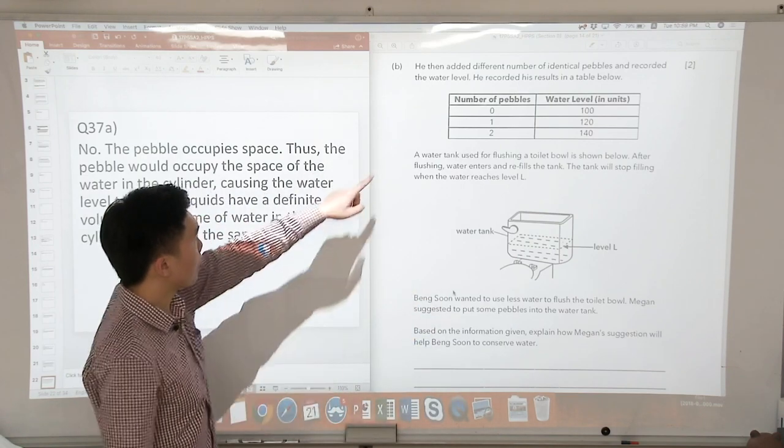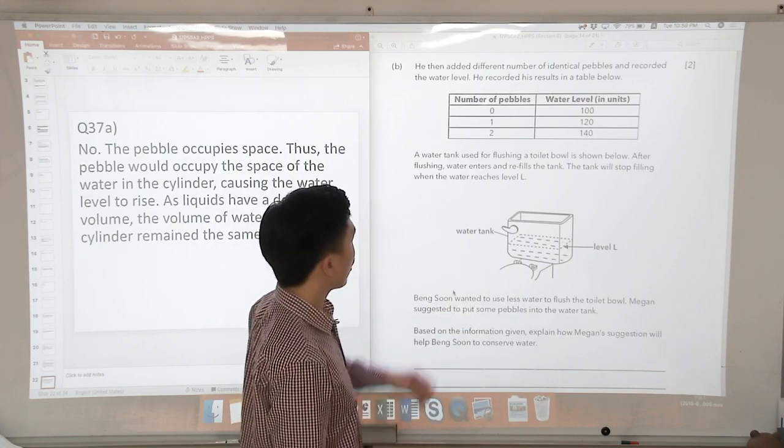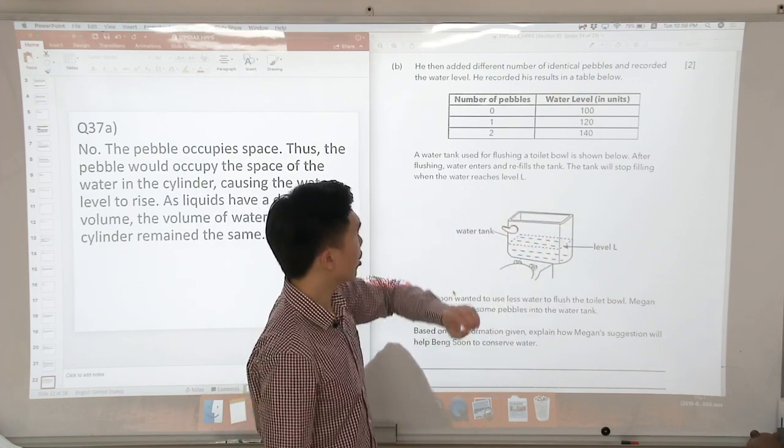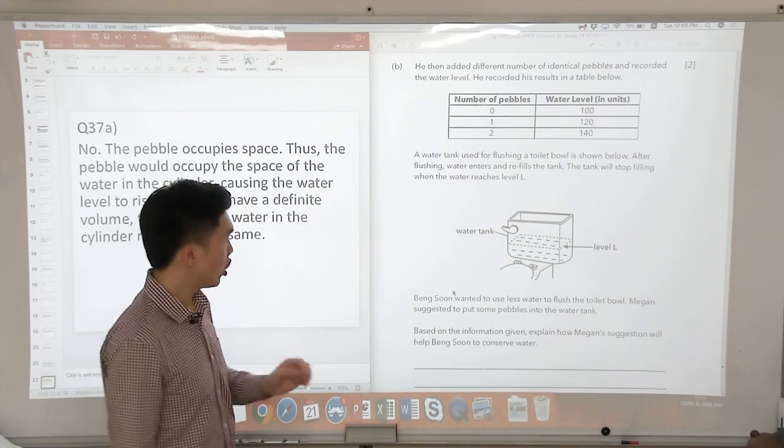So let's look at the second part. A water tank was used to flush a toilet bowl as shown below. After flushing, water enters and refills the tank. The tank will stop filling when the water level reaches L.